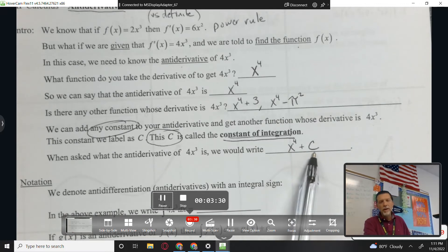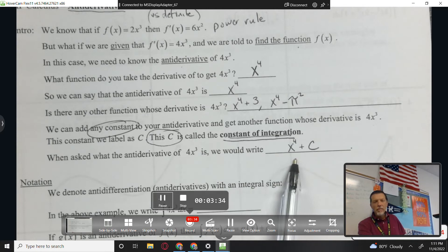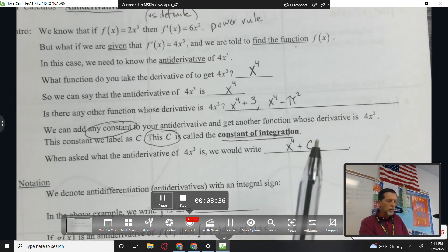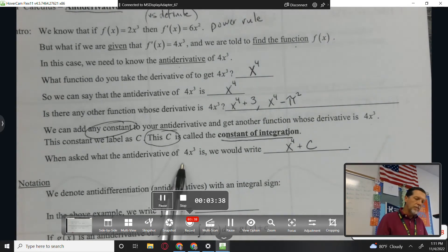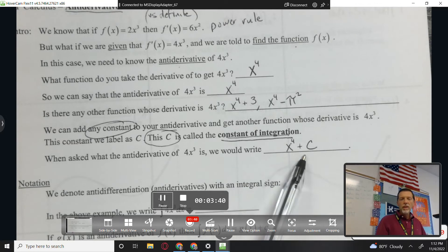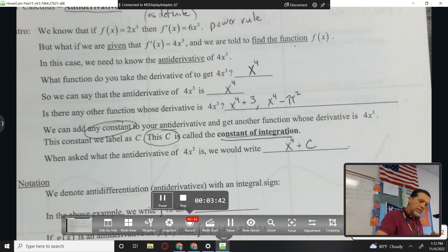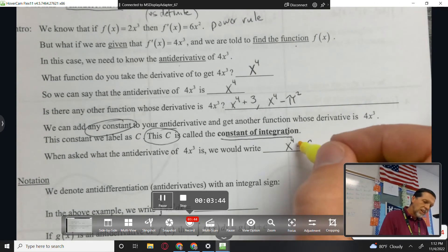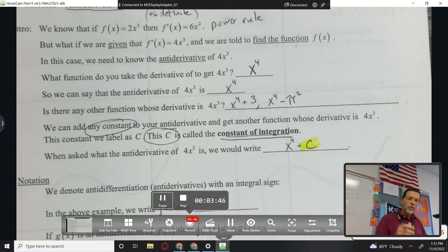Now, later we'll worry about is there a way we can figure out what c is? Is there a way around things? Yes. But right now, the antiderivative of 4x cubed is x to the fourth plus c. Circle it, highlight it, don't forget the plus c.